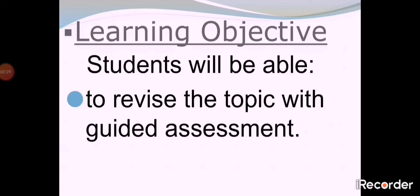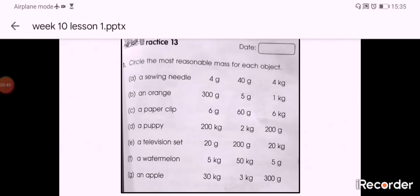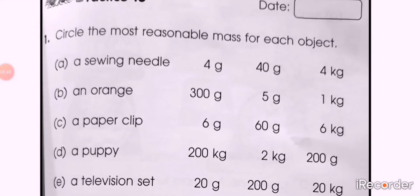Now open 2B workbook page number 119. Write day, date, and classwork at the top. Practice 13, question number one: circle the most reasonable mass for each object. We have some parts here. Each part has three options and you will circle the suitable option for each part.